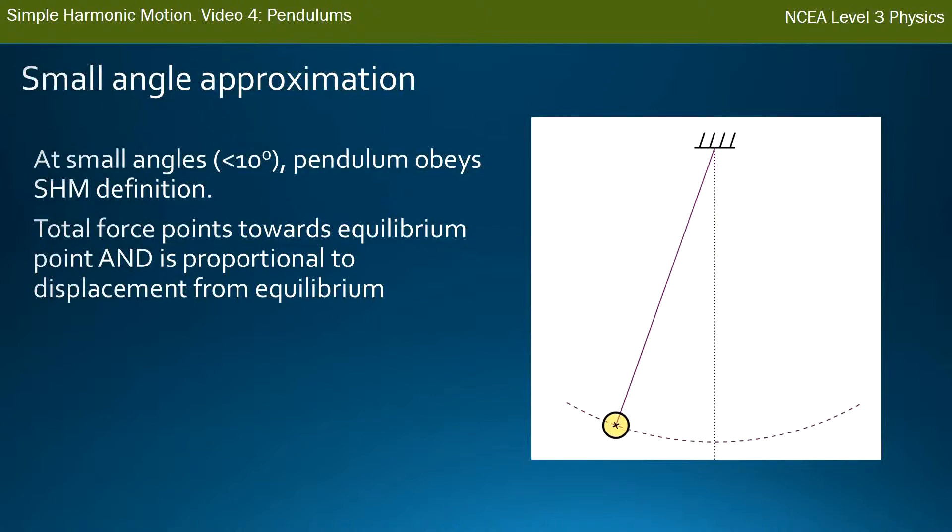But as you get larger and larger angles, that force moves more and more away from pointing towards the equilibrium point. So any pendulums you have to ask questions about this year should be less than 10 degrees, and occasionally an examiner might ask you, what approximations have you made with this pendulum? And you can just say, look, it's less than 20 degrees, this is the small angle approximation.